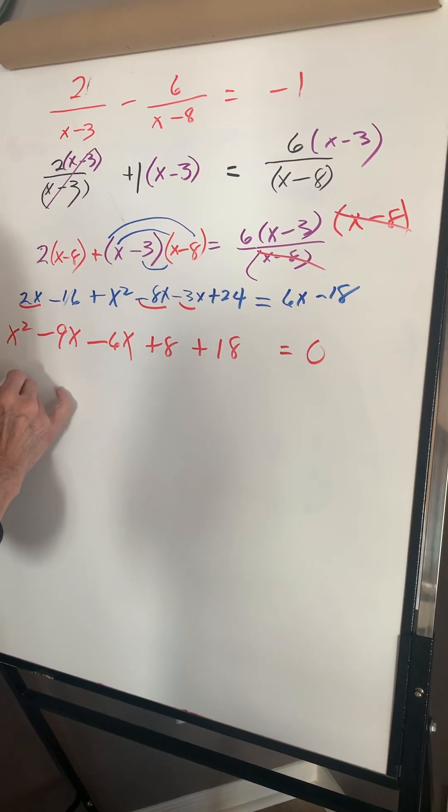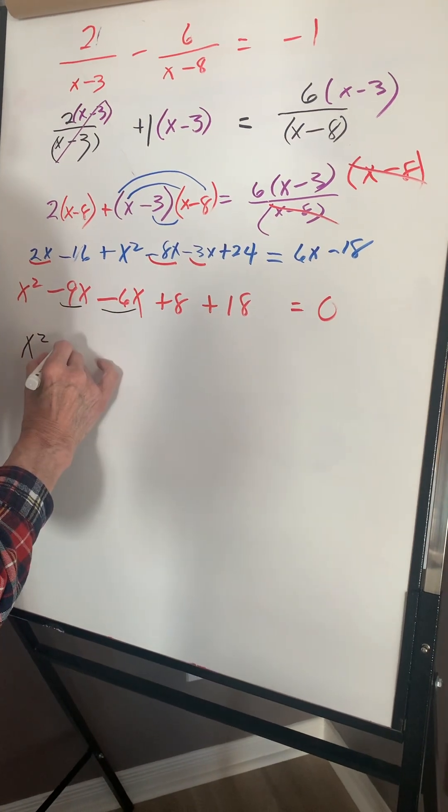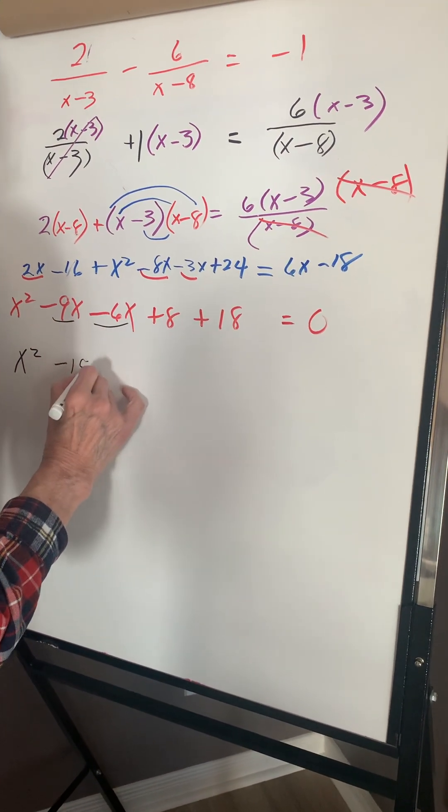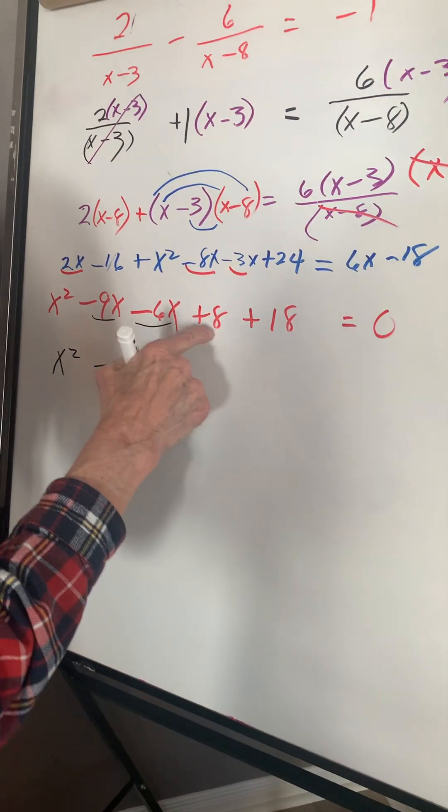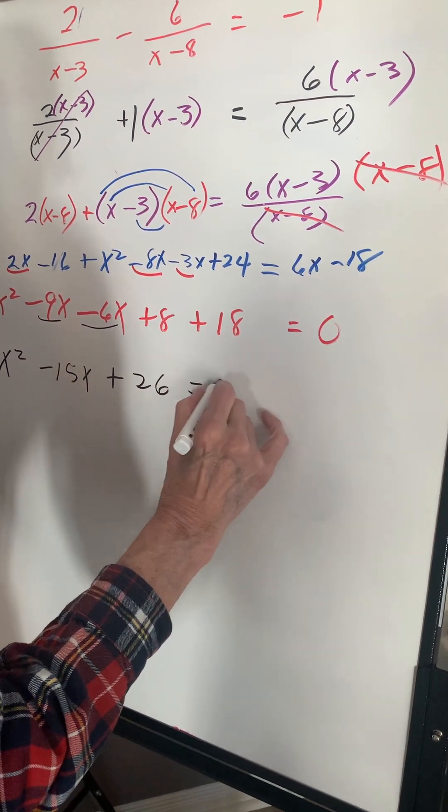We have an x squared term. 9 and 6 is negative 15x, and 8 and this is going to be plus 26 equals 0.